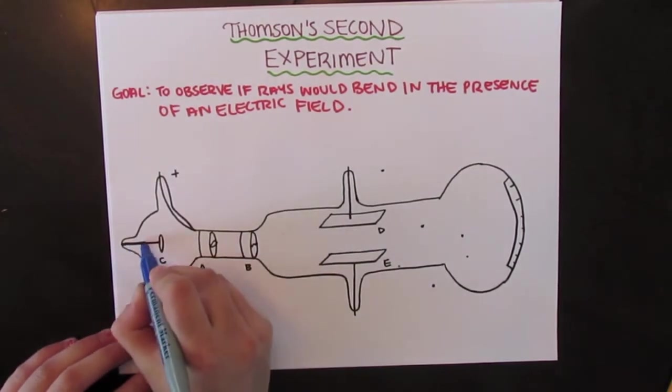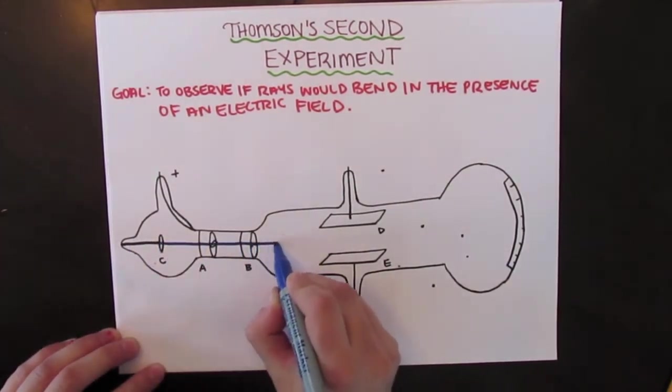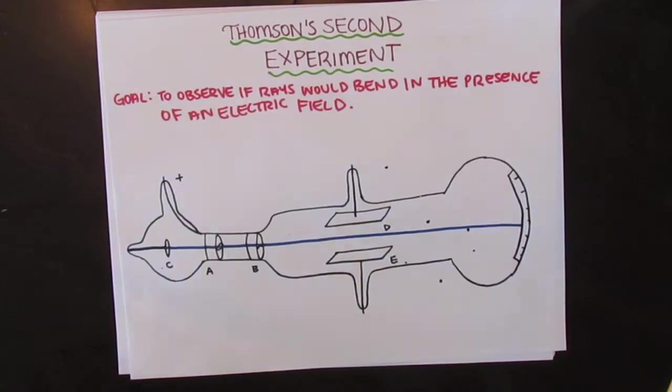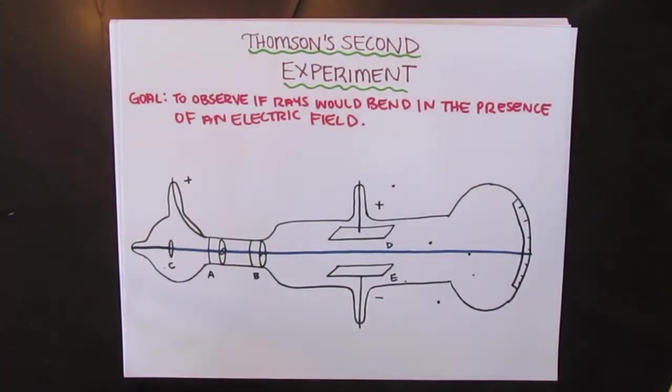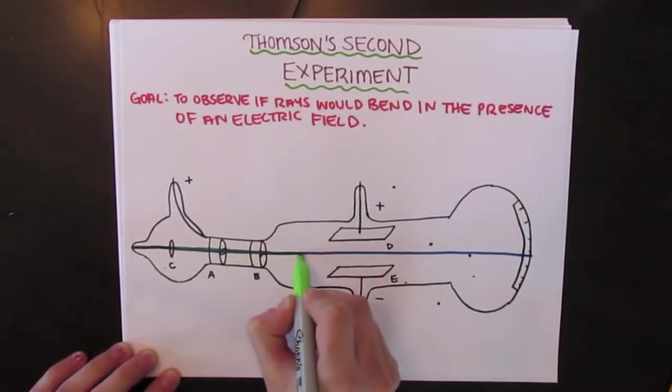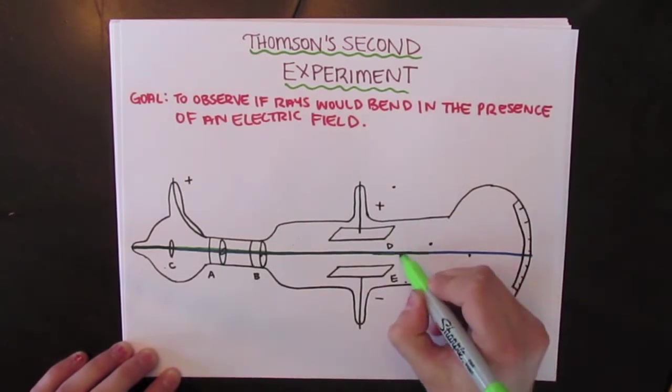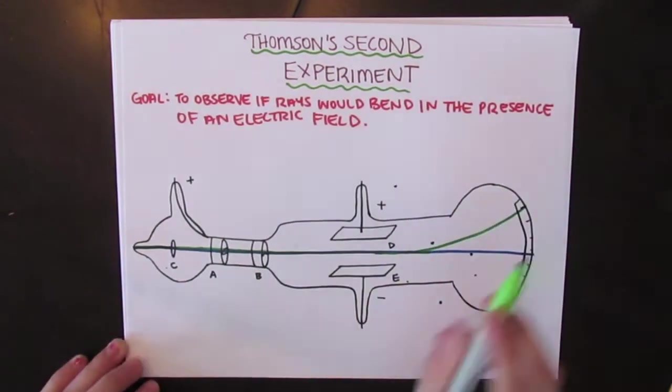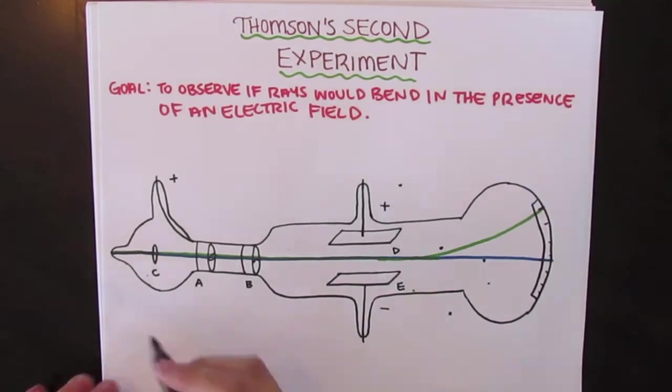Normally, without the presence of an electric or magnetic field, the ray beam would travel in a straight line. However, he found the rays bent towards the positively charged plate when an electric field was added. This is the opposite way the ray bent in his first experiment.